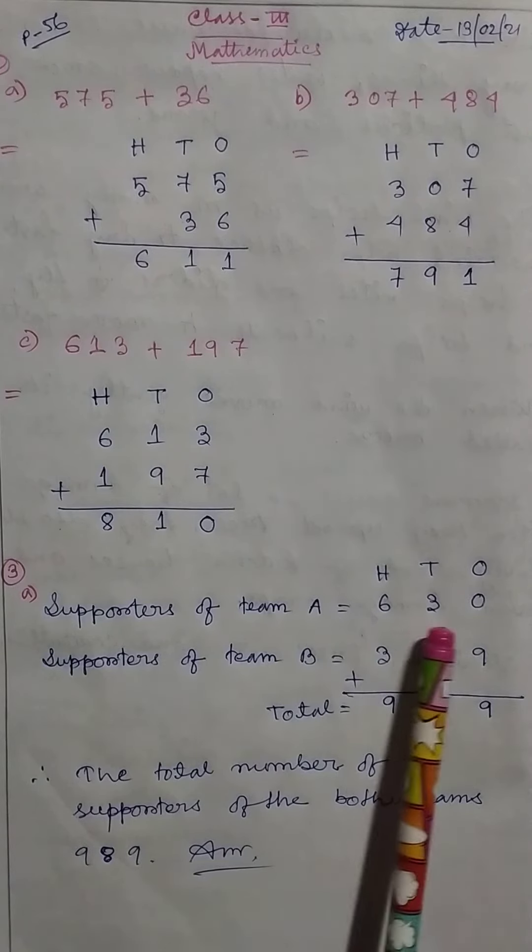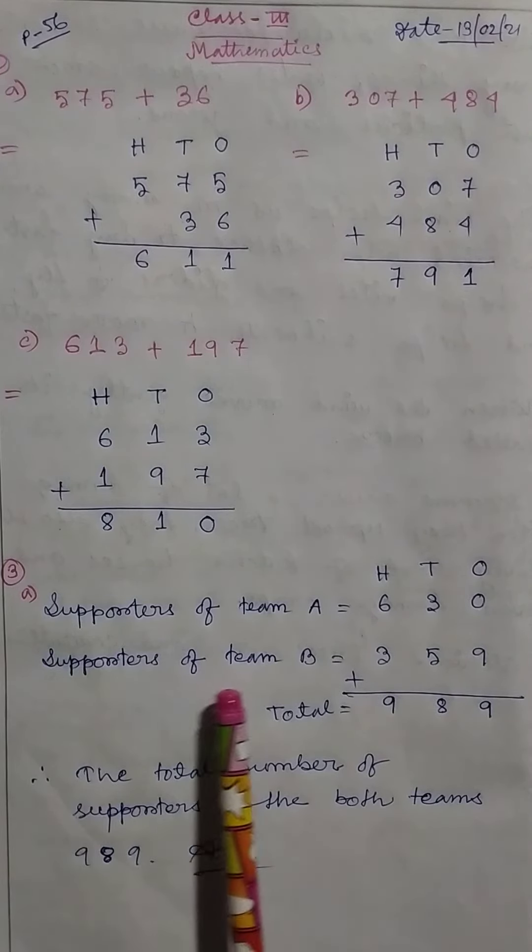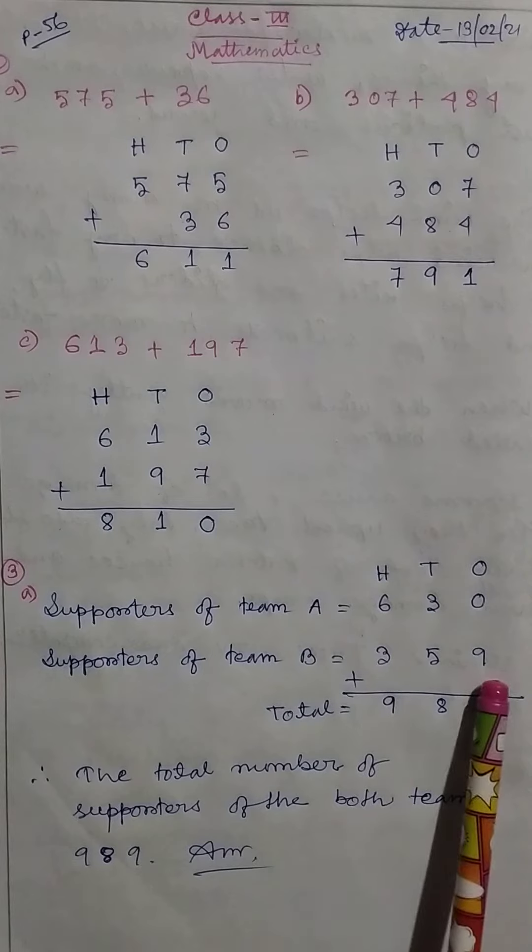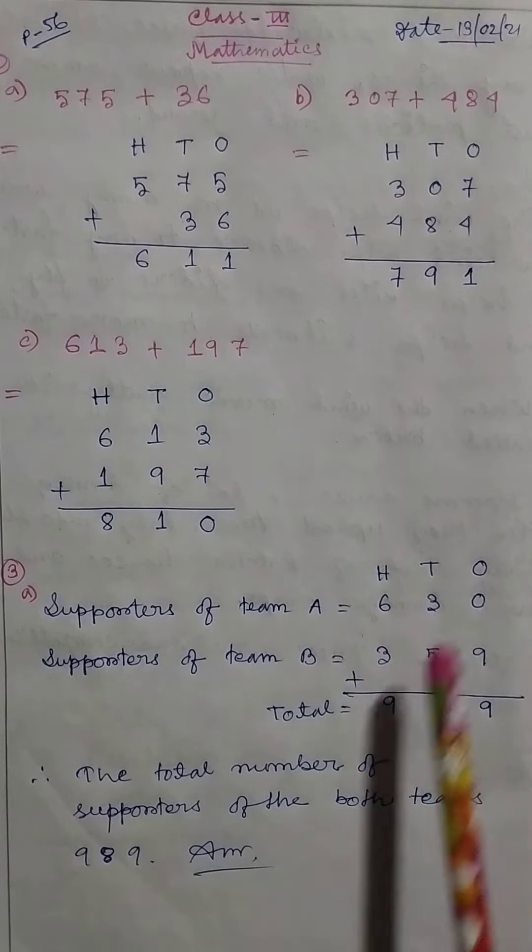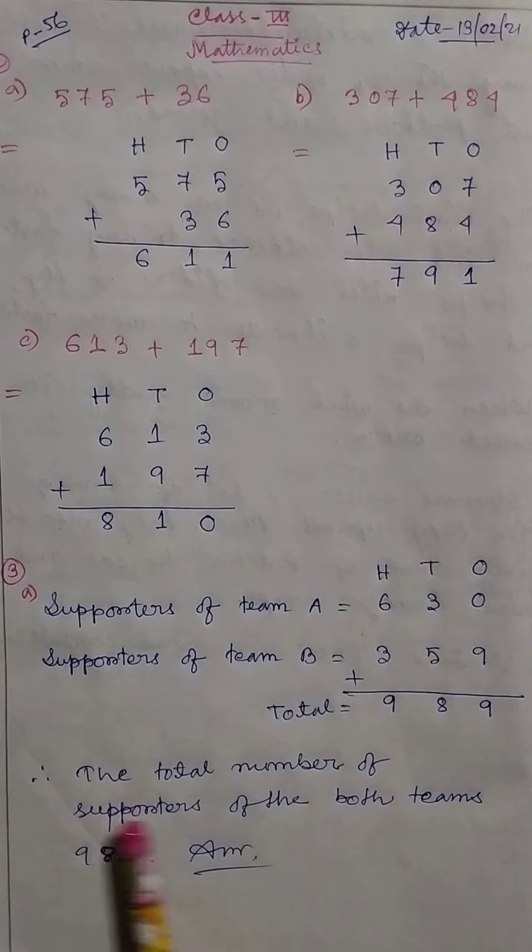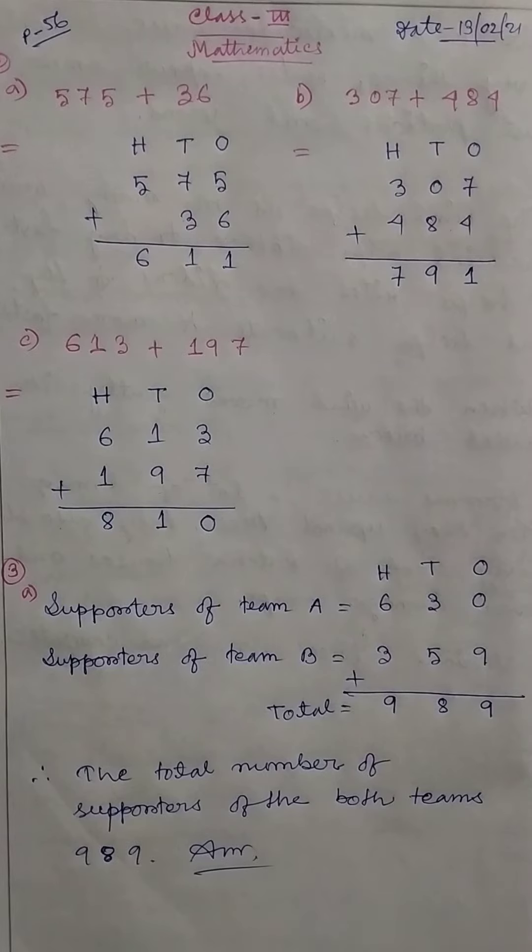Supporters of team A equal 630, and supporters of team B equal 359. So the total is 989. The total number of supporters of both teams is 989. Thank you.